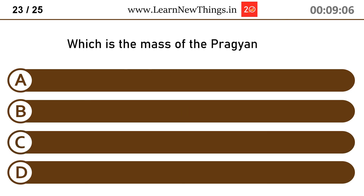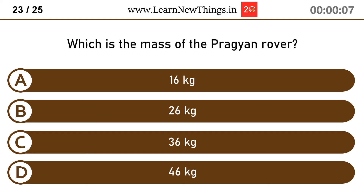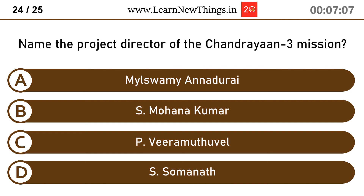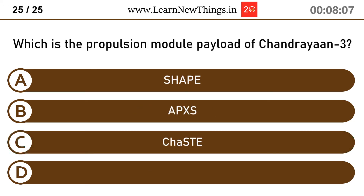Which is the mass of the Pragyan rover? 26 kg. Which is the propulsion module payload of Chandrayaan 3? SHAPE.